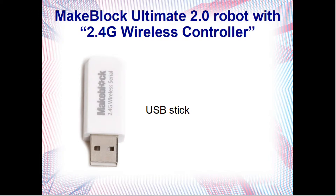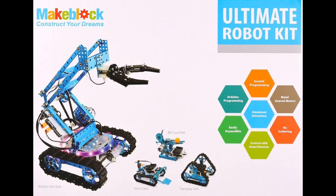In a previous video, I talked about the 2.4G wireless controller, which is a USB stick that plugs into your PC or Mac, and that enables you to have control over the Ultimate 2.0 robot, or MBot, if you have that one. What I wanted to do today is talk in a little bit more detail about the program that I wrote for that.